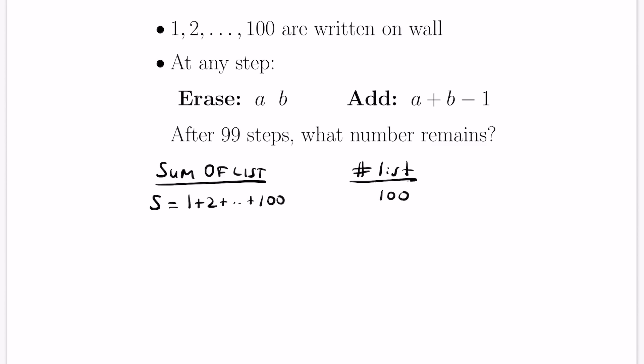We can keep track of the sum of the list and the number of integers in the list. We start off with a sum S, which is 1 plus 2 all the way up to 100. The list has 100 elements in it. When we do our first move, the list sum decreases by 1 and the number of elements is 99. Doing this again, we'll have a total of S minus 2 and a list with 98 elements. So as we continue, if we look at this pattern, when we're left with exactly one number in the list, the total sum is S minus 99.